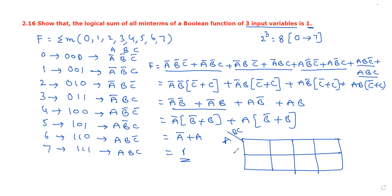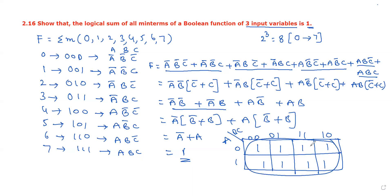3-variable KMAP with variables A, B, C. If all minterms are present, all boxes in the KMAP will be ones - we will have 8 ones. Grouping all 8 ones together gives a single group covering all columns, and the result is F equal to 1.